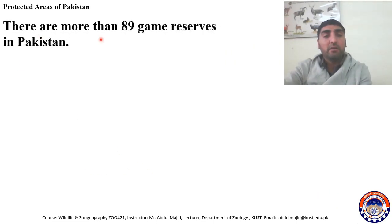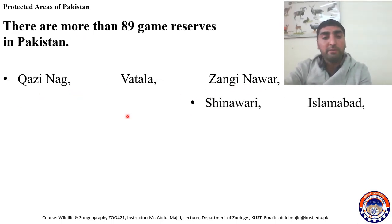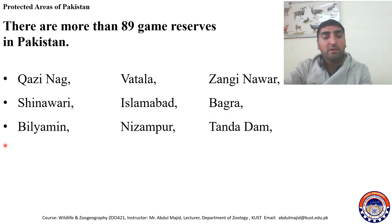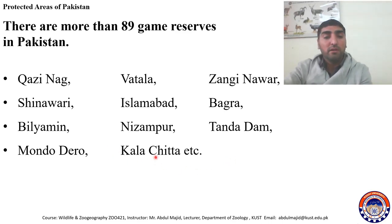There are more than 89 game reserves in Pakistan — the number is now more than 100. Some of them include Kazinag Watala Game Reserve, Zangi Nawar Game Reserve, Shinwari Game Reserve, Islamabad Game Reserve, Bagra, Beli Ameen, Nizampur, Tanda Dam (in Kohat), Mandro Dero, and Kalachitta, among many more. You should open your books and study all the names of the game reserves present in Pakistan.